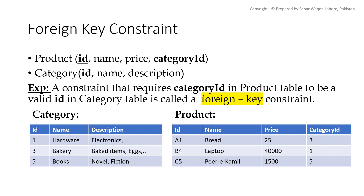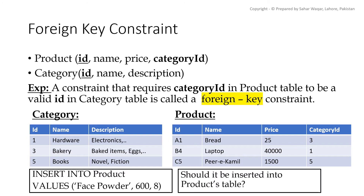Maybe we can insert into the product table temporarily without a category ID, that is, adding null as its value. After adding the tuple in the product table with null category ID, we need to now add this category in our category table. After adding this new category, we can update the existing product table with the new category ID.